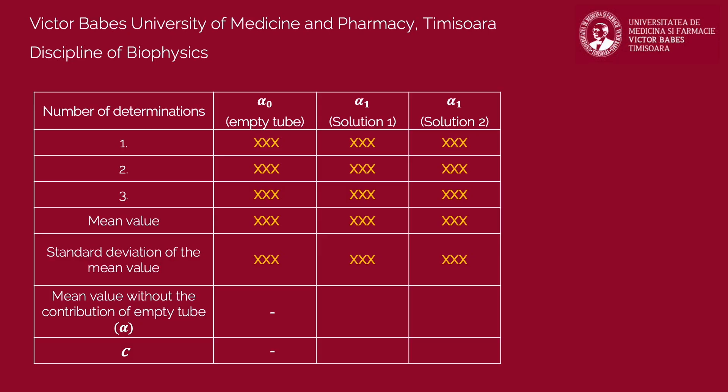To correct the calibration of the polarimeter, subtract the rotation with the empty tube from the values obtained with the two solutions inside. The results represent the net contribution of fructose in rotating light's polarization plane. Using these two values, calculate the concentration of the two solutions using the given formula.